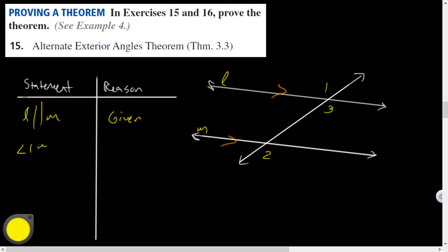I'm going to say angle one is congruent to angle three. Why is that? What types of angles are those? Vertical angles theorem. You got it, man.